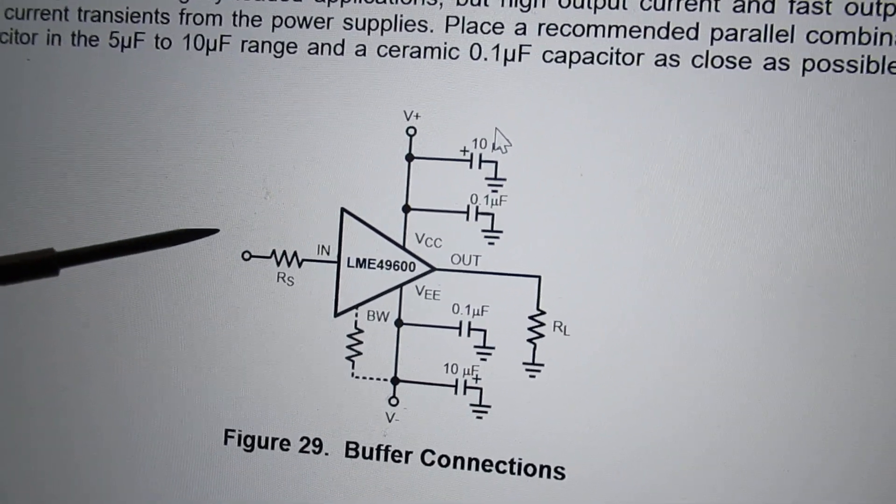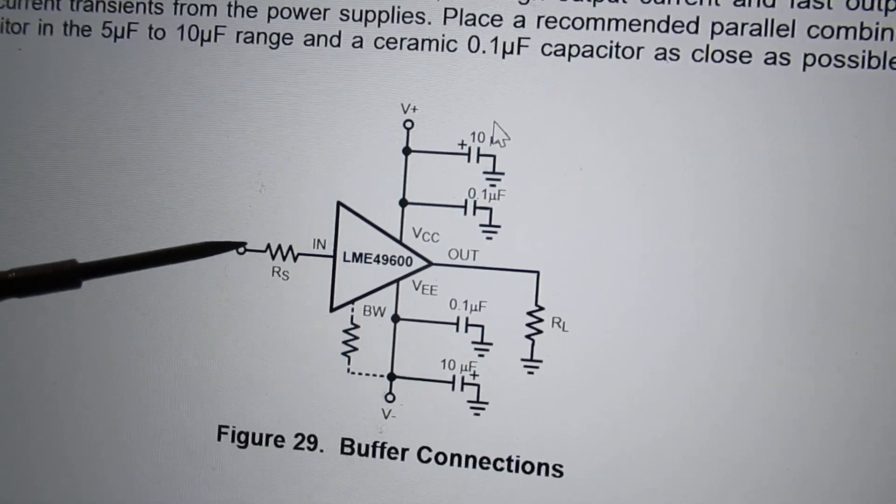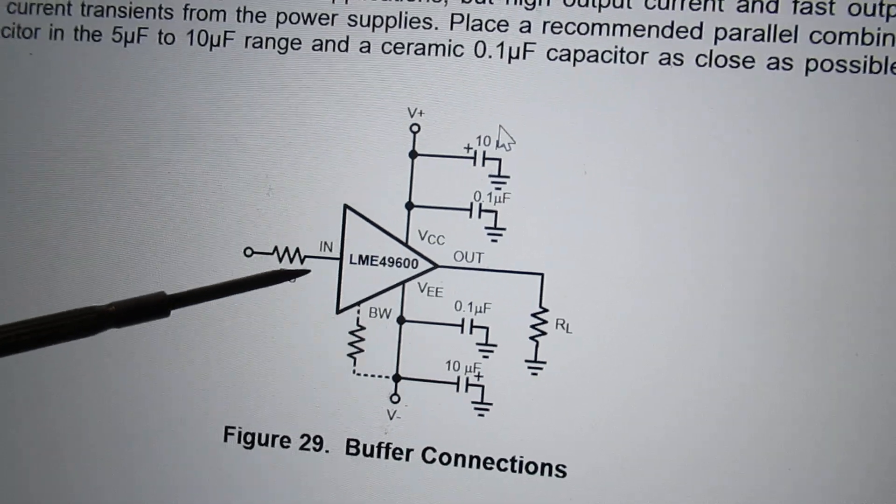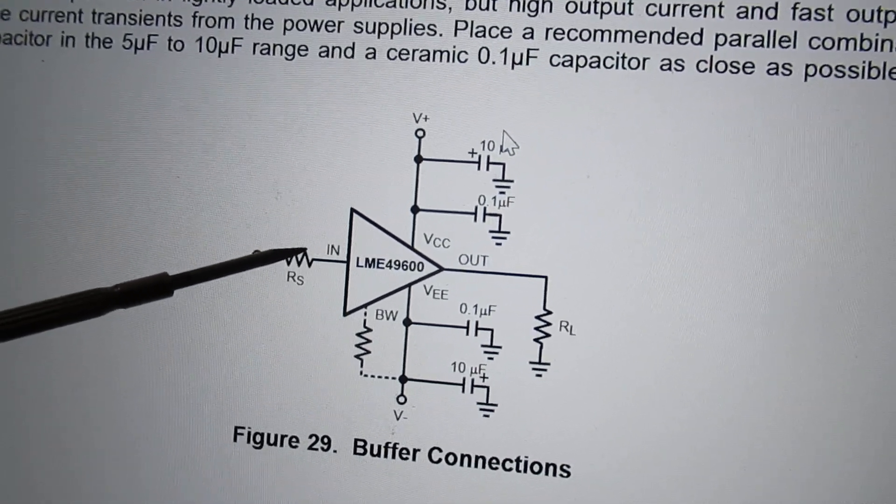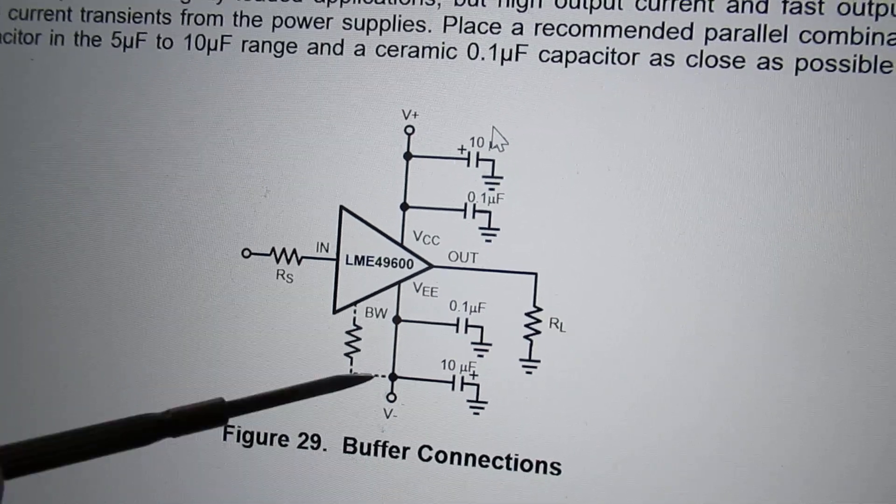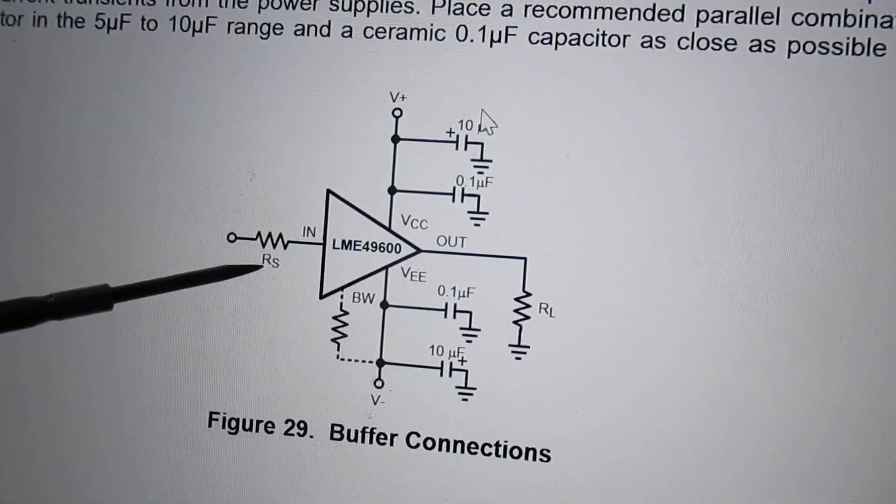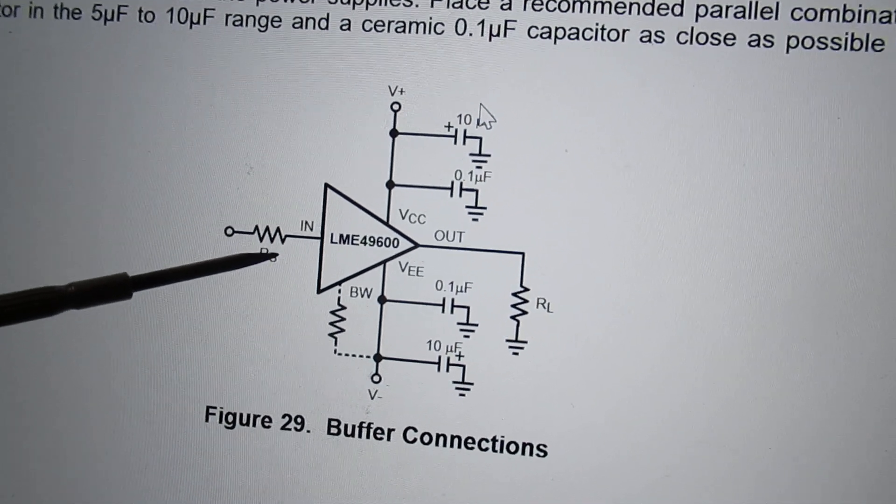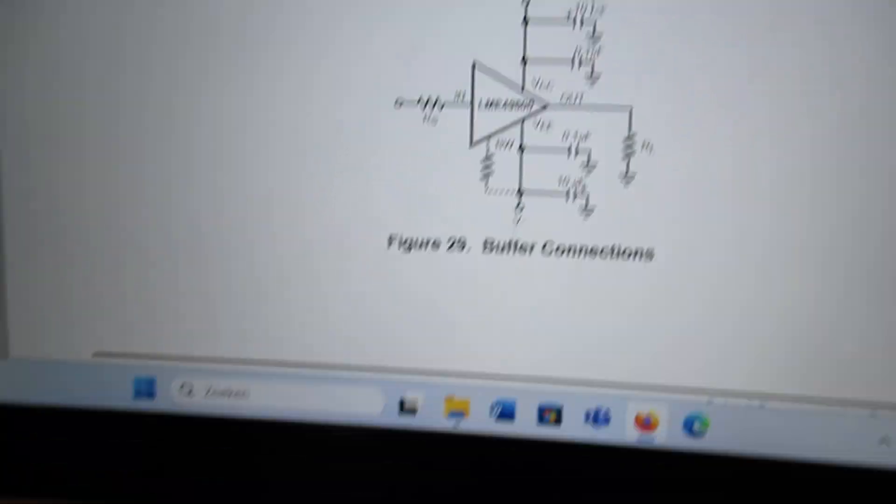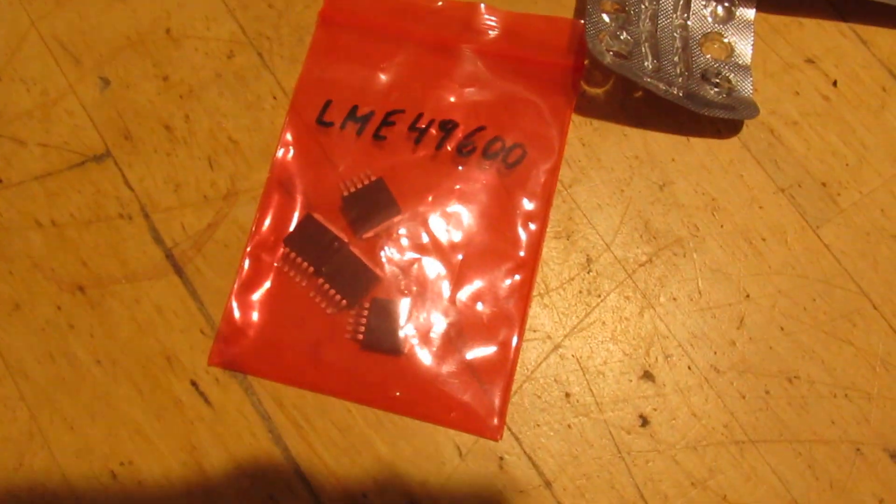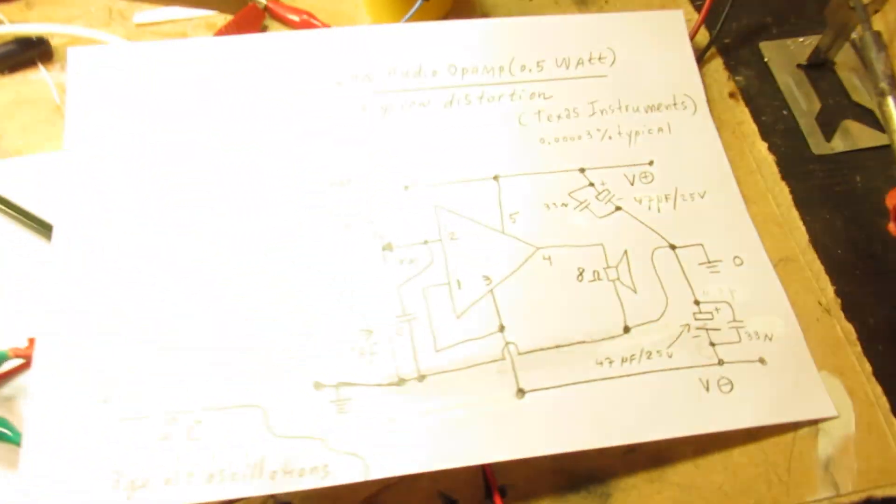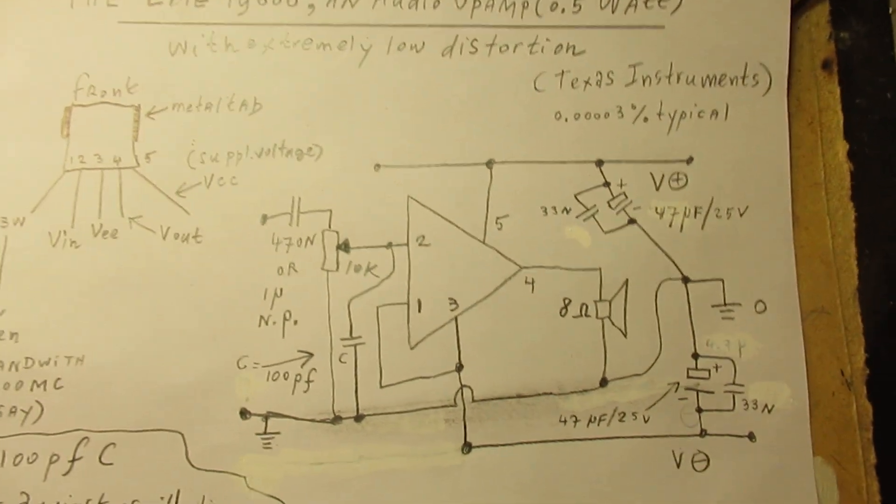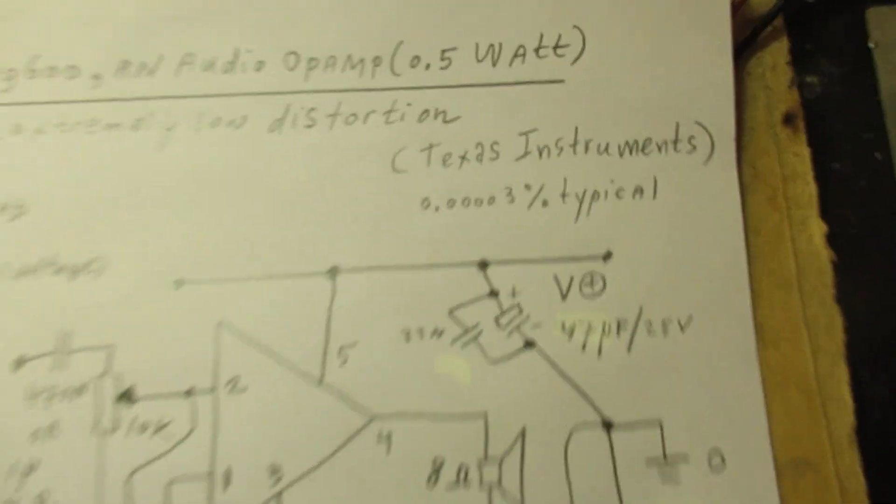But I tested this out in many ways. 470 picofarad from the input of such an audio amplifier to ground only limits the highest frequencies going from 20 kilohertz or higher. So that was a lot to tell. Let's listen how this chip sounds. Of course you can boast that you have made an audio amplifier that has such a low distortion.